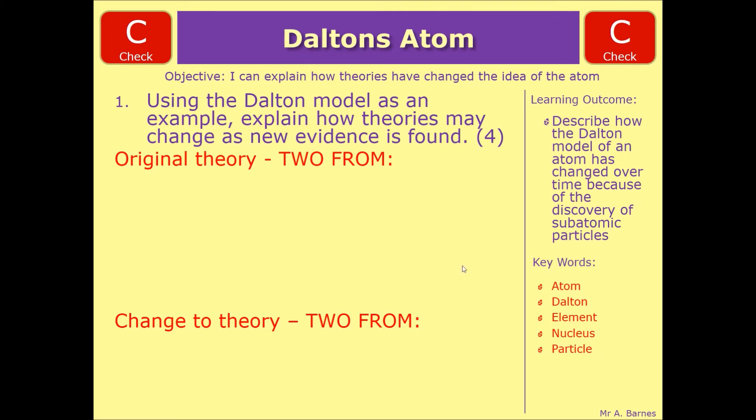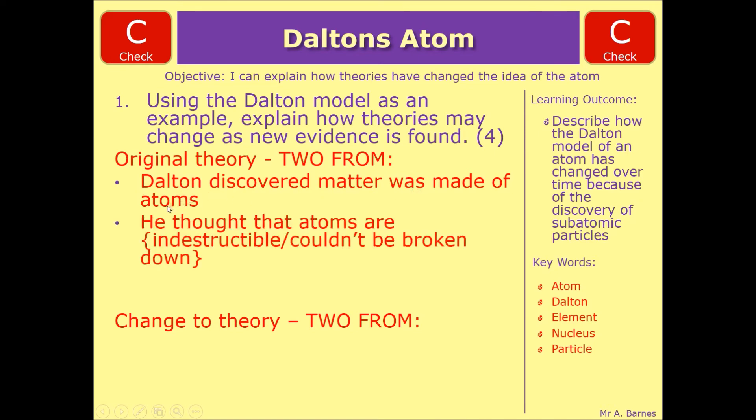If we start off with the original theory, the things that you could have put down is that it was Dalton that discovered matter and it was all made of atoms. For one mark, he thought the atoms were indestructible or couldn't be broken down is your second mark. And then a third possible mark is in an element all the atoms are the same. So that was his original theory. If you've got all three of those, the maximum you can get is two marks.